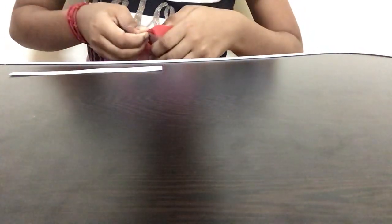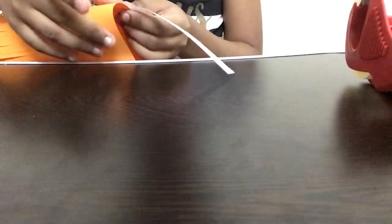So after we're done with that, we have to take a white strip of paper to make the handle. So I'm taking another two pieces of cello tape. Now we have to stick the handles to the lantern and on the opposite side as well.